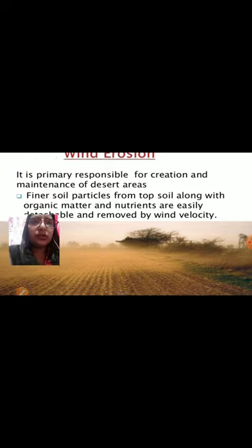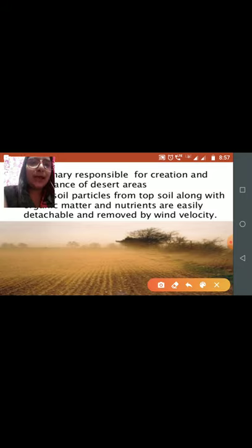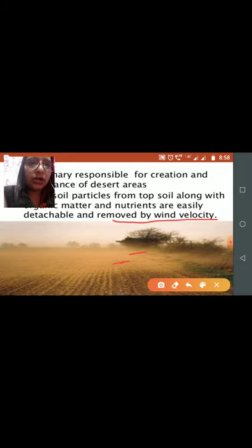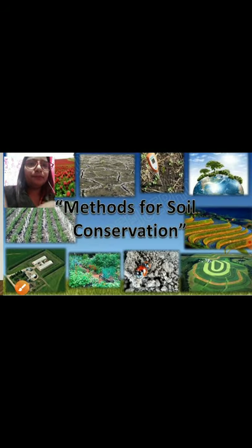Wind erosion is the removal of the topsoil along with organic matter and nutrients by the velocity of the wind. As you can see from the picture, the topsoil along with organic matter is carried away by wind action. Wind erosion is very common in desert areas like Rajasthan and the coastal regions of India.